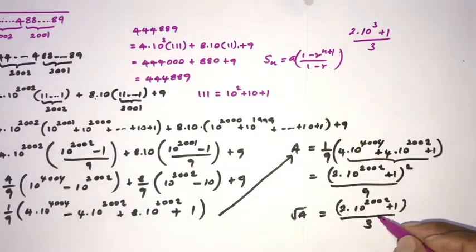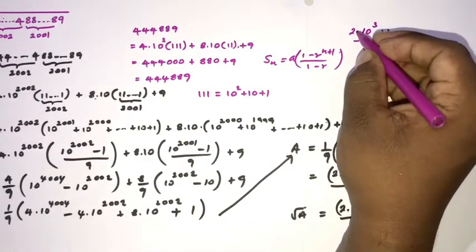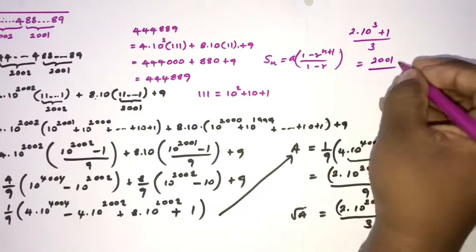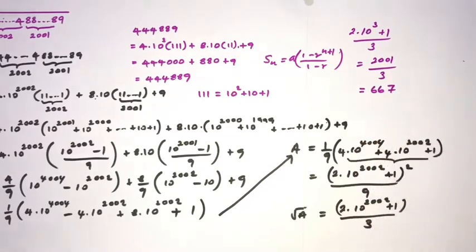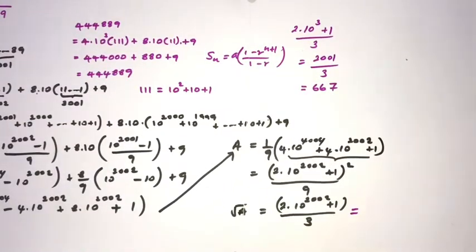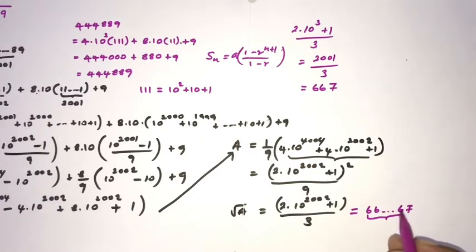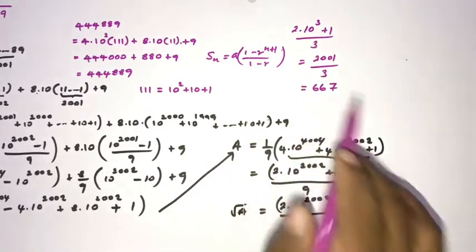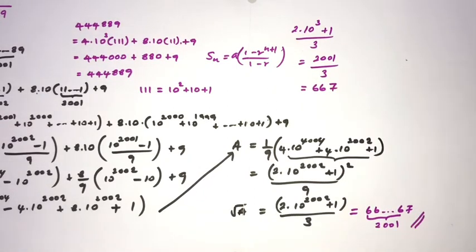We can simplify this further: 2 times 10^2002 + 1 over 3 equals 10^3 times 2 times 10^2000 / 3, giving 2001 over 3 which equals 667. So we can write the answer as 6 repeated 666 times, then 7 — that is, 6 repeated 2001 times followed by 7. This is the answer. If you like this type of video, please subscribe to the channel. Thank you for watching.